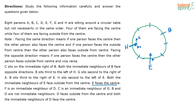Both the immediate neighbors of E face outside the center. Both the immediate neighbors of B face in opposite directions. B sits third to the left of H. G sits second to the right of A. B sits third to the right of E. H sits second to the left of E. E faces the center. F is an immediate neighbor of D.